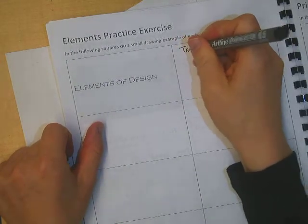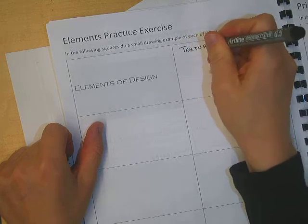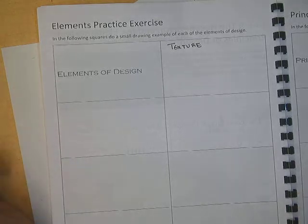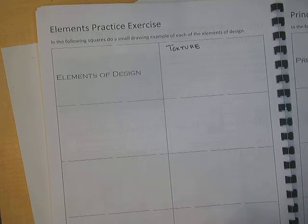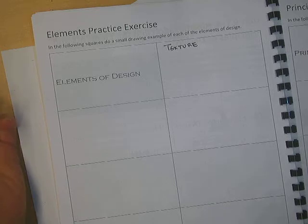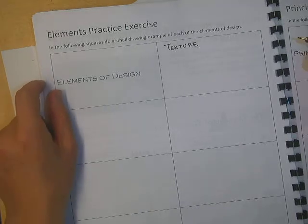So one of the elements of design is texture. So I'm going to write texture in this box over here. And I'm going to create a little tiny, mini piece of artwork that describes texture. So we talked a lot about texture with the Zentangles. So remember, texture is how something would feel if you were to touch it.